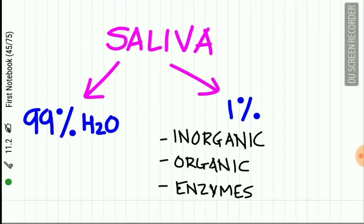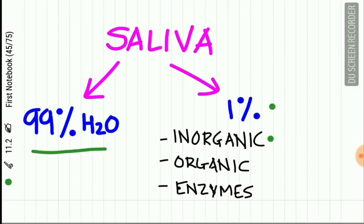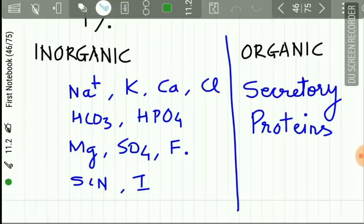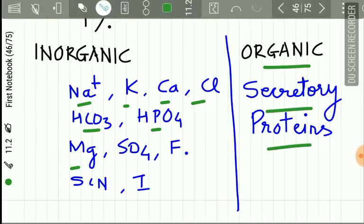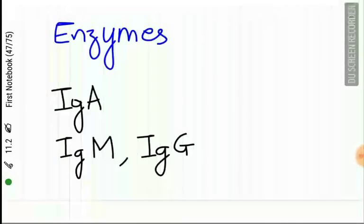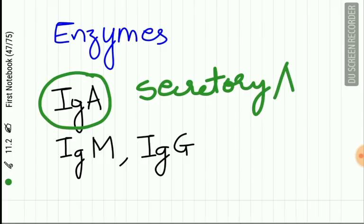Saliva is composed of 99% water and 1% other substances, including inorganic material, organic material, various enzymes, and important immunoglobulins. The secretory immunoglobulin IgA is present in saliva, along with small amounts of IgM and IgG.